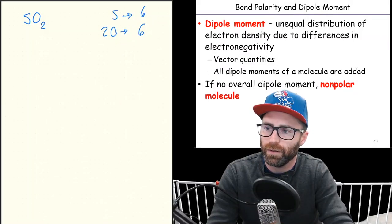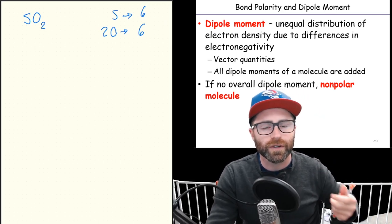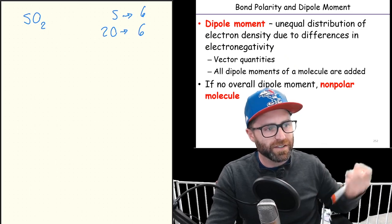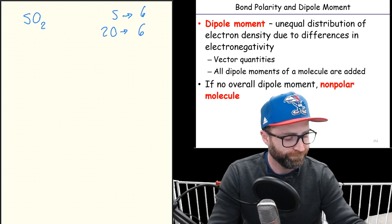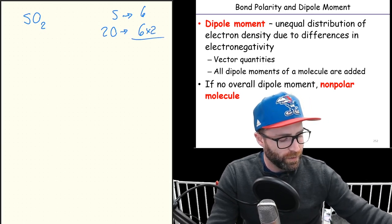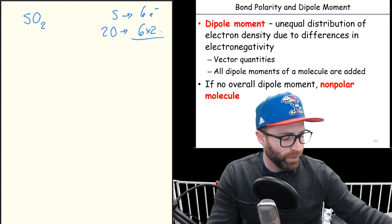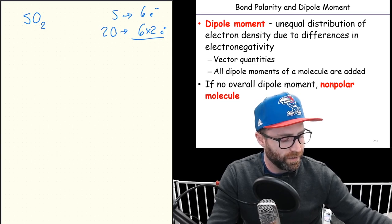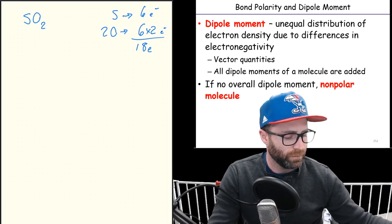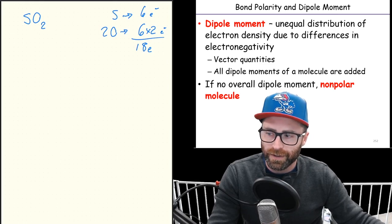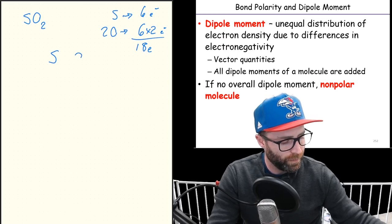Alright, if we're going to draw the Lewis structure for SO2, you've got to first have its actual amount of electrons. So six electrons for sulfur, 12 total for the oxygens - 18 total, right?